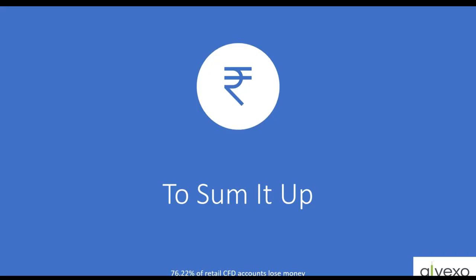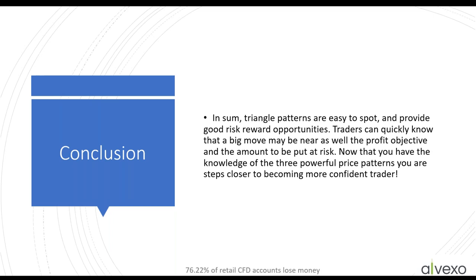For price targets, there are all kinds of ways people predict the target based on the base at breakout, but stop at not just the next level of support and resistance — the next major level of support and resistance, and use that. Having Fibonacci levels on your chart is a really good way to use your breakout and your candlestick base because Fibonacci levels are wide enough apart to help you see where to set your limit and calculate your risk-reward ratio. To sum it up: triangle patterns are easy to spot and apply good risk-reward opportunities. Traders can quickly know that a big move may be near, as well as a profit objective and the amount to be put at risk.